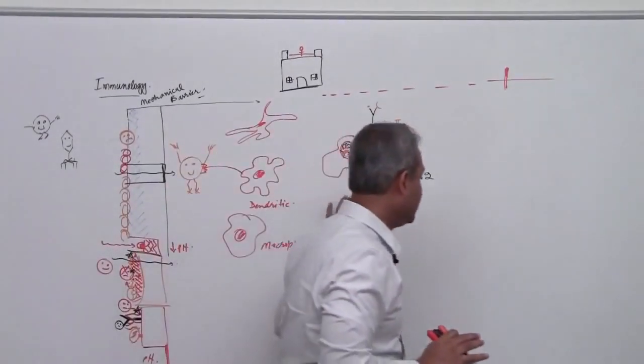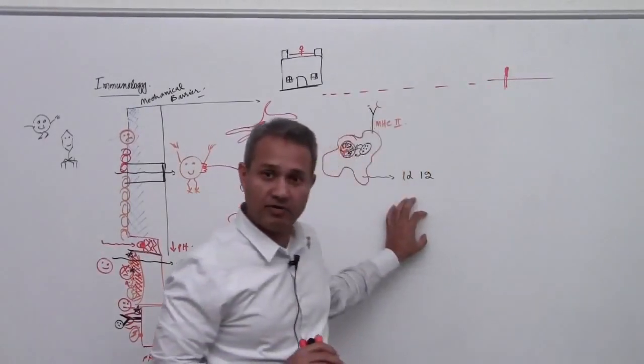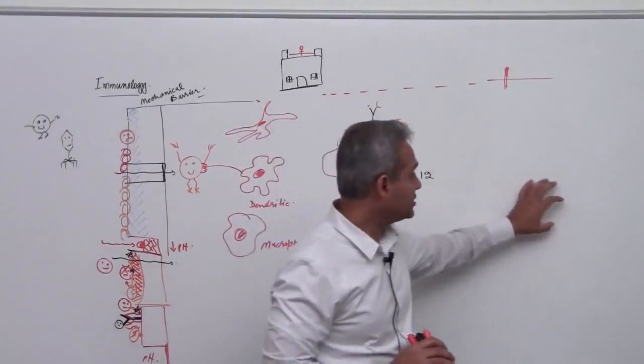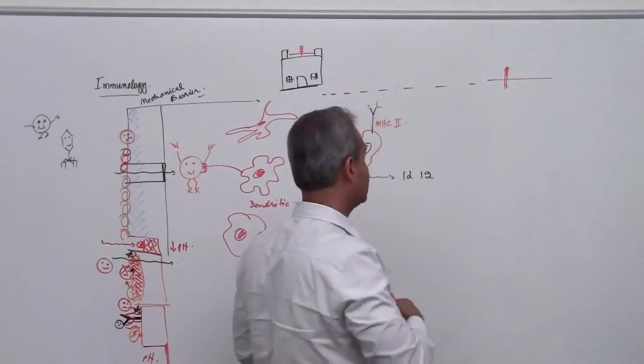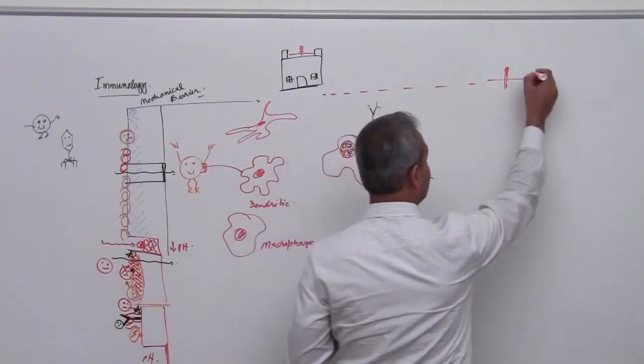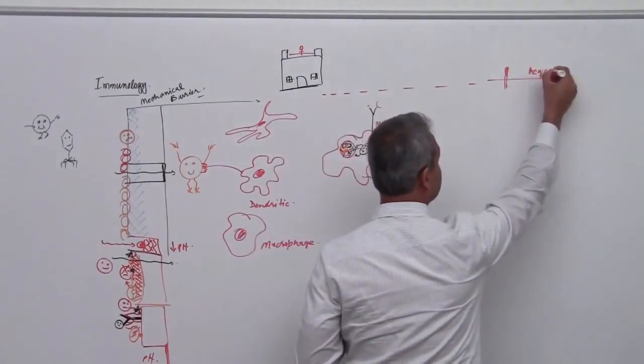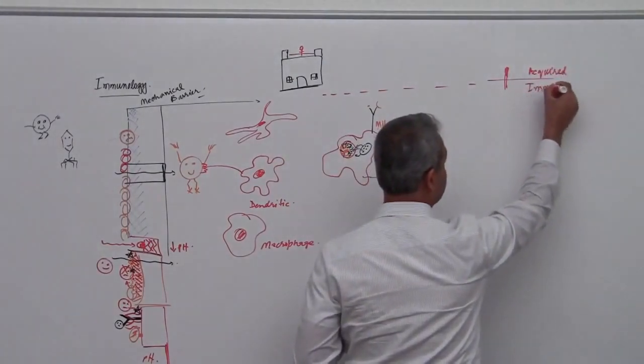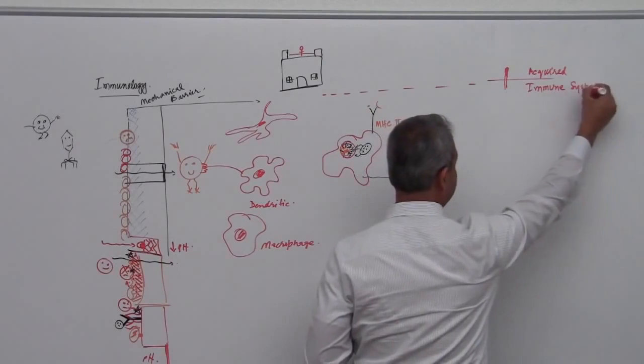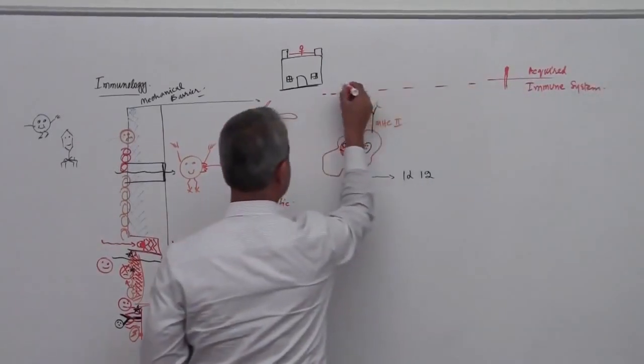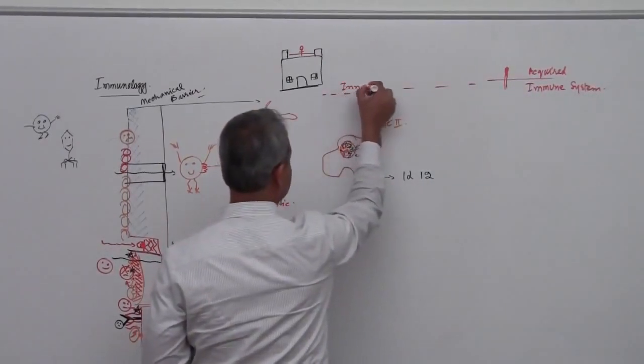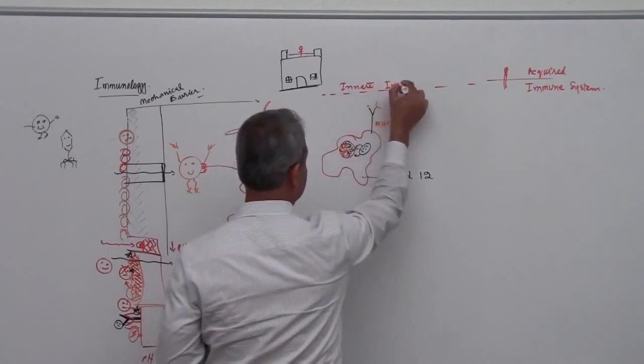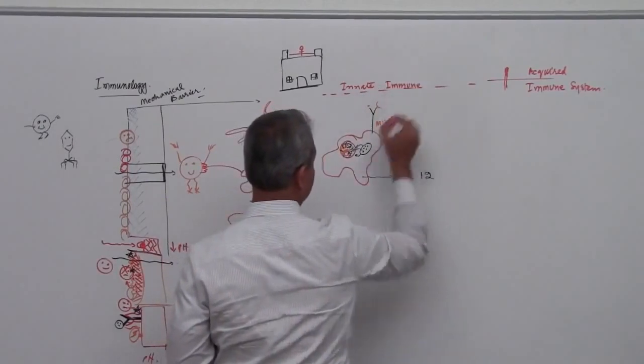We will talk more. Then this IL-12, it acts on a set of cells which are called acquired immune system. So this was innate immune system, right?